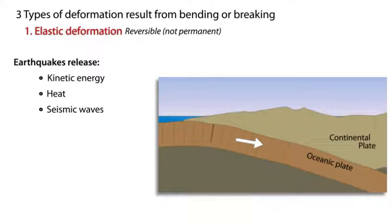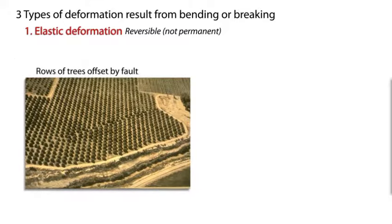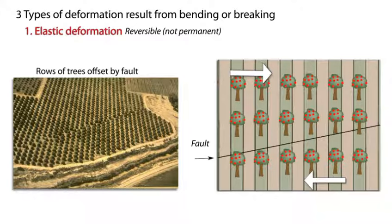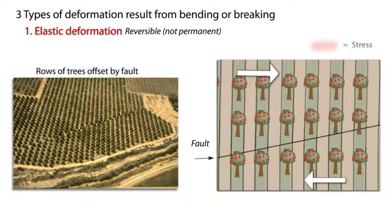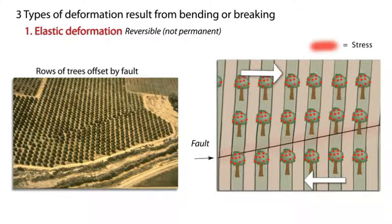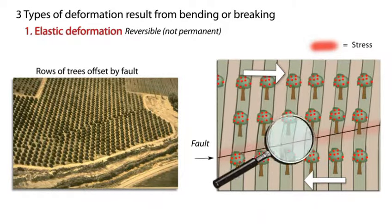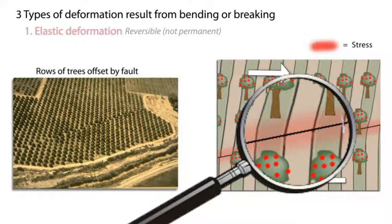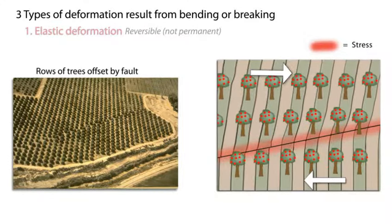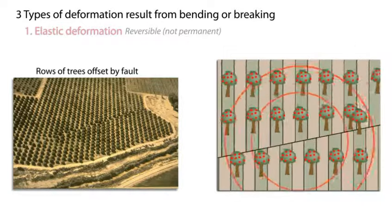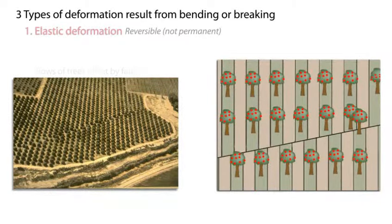Blocks of rock hundreds or even thousands of miles across require immense, slow, steady stress to deform elastically. For example, crustal material deforms with a steady bending near either side of a pre-existing locked fault. Sudden movement along the fault occurs when the accumulated stress overcomes friction and stored elastic energy is released as the ground returns to its original shape.